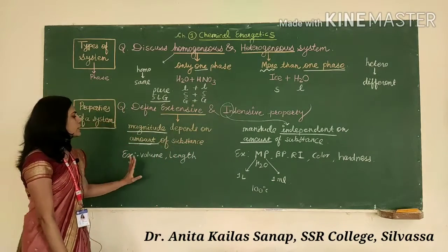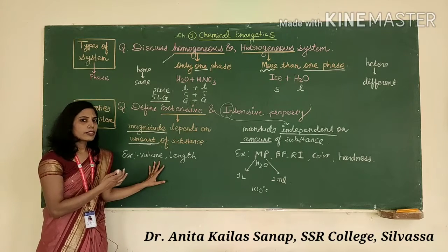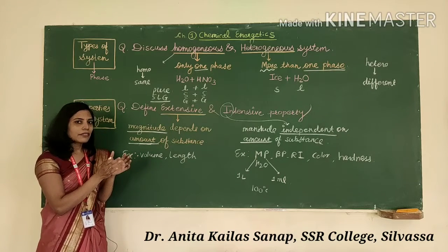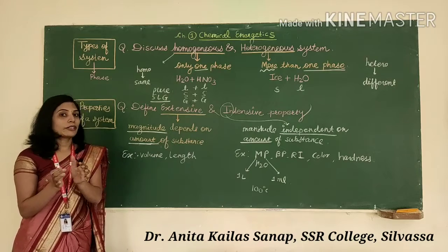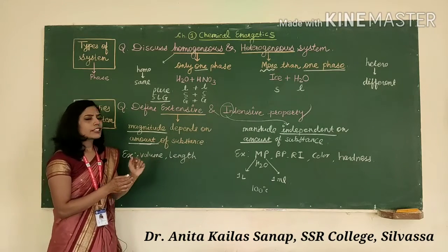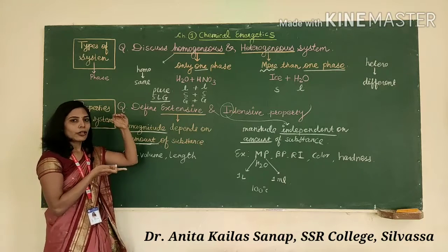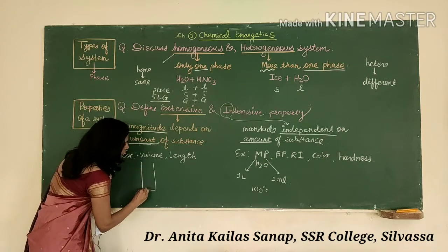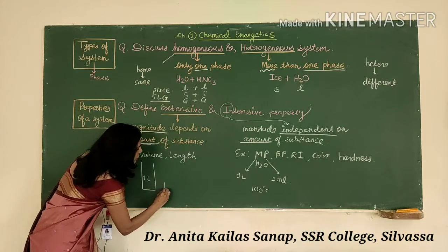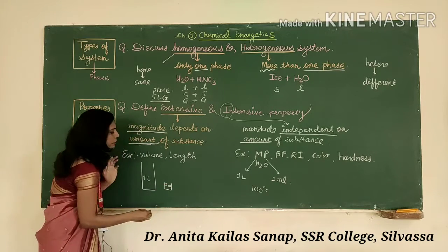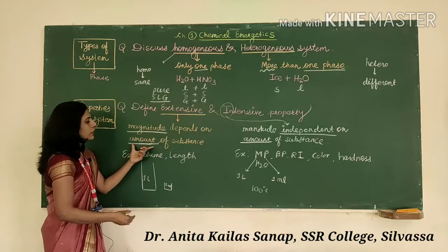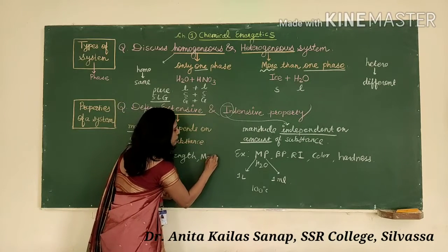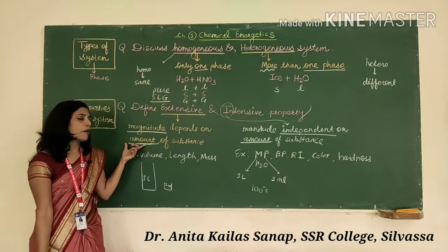Whenever we consider volume, a small amount will have a different volume and a large amount will have a different volume. So 1 liter of water will have this much volume, while 1 ml will have only a smaller volume. Volume is dependent on the amount of substance. Another example is mass — mass also depends on the amount of substance. 1 kg is different and 1 gram is different.